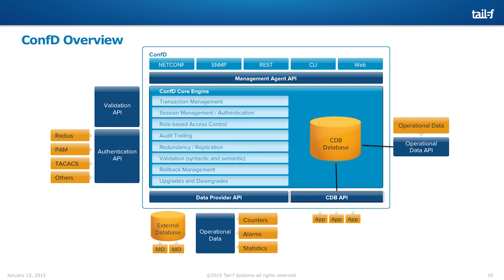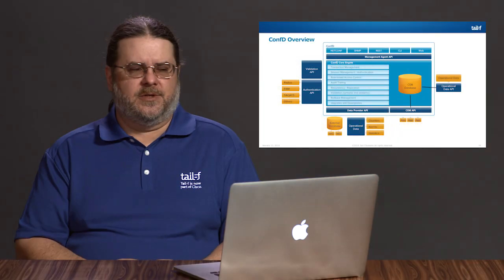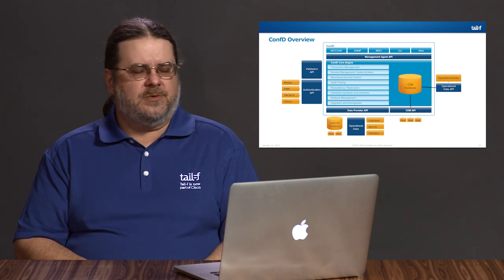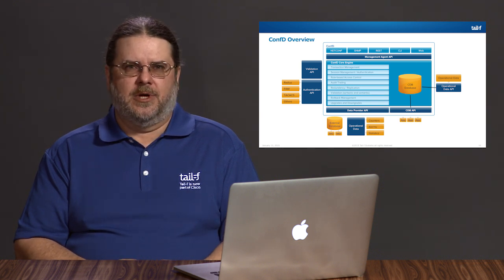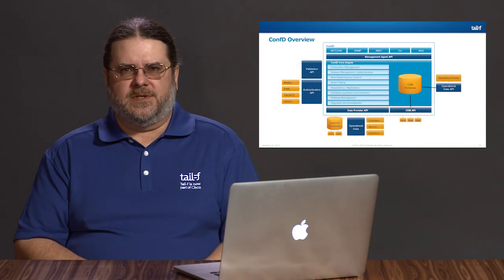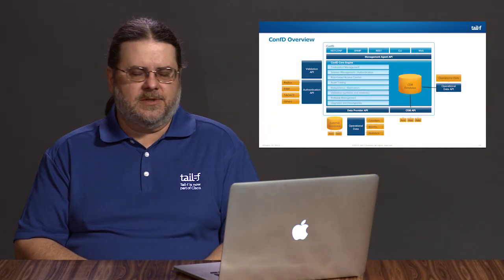At the heart of ConfD is that transaction engine. All configuration changes which go through ConfD are transactional — whether we're using a transactional or a non-transactional user interface, it is still a transaction when it goes through the core engine. In addition to transactions, ConfD provides a full implementation for your AAA system — authentication, authorization or access control, and auditing. In a subsequent module, we'll go much more in-depth into the AAA system.